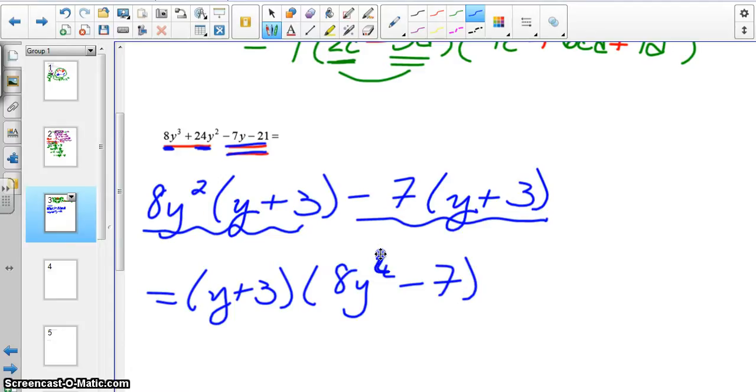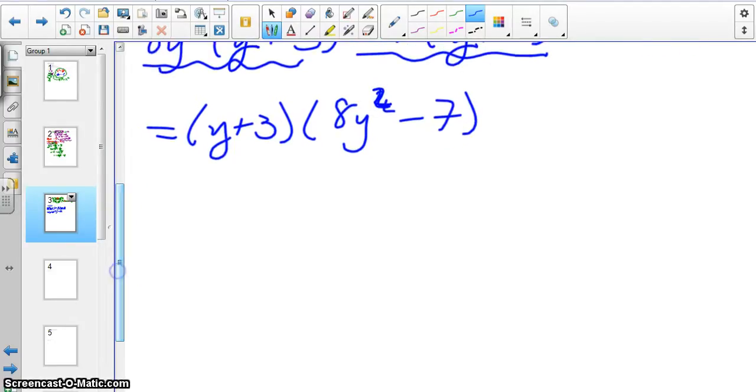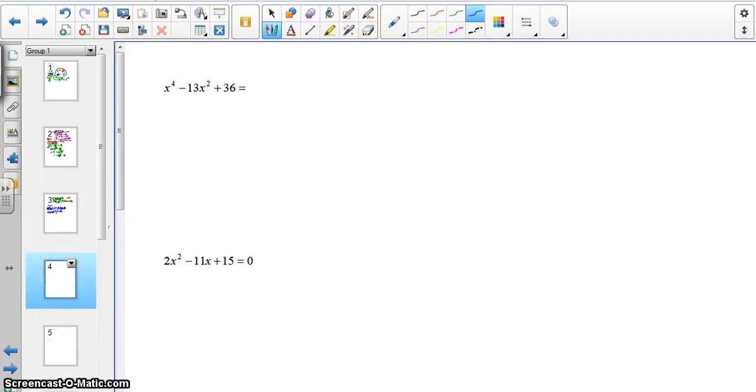This next example is sort of like a quadratic or a trinomial. Let me say it this way. The way that we would factor this is the same way we would factor a trinomial that had an x squared. It's just that instead of x squared we have x to the fourth. So we are going to break this down as like backwards foil, if you call things foil. We'd have an x squared times an x squared to get the x to the fourth. And then in back, negative 9 and negative 4 multiplied equal 36.